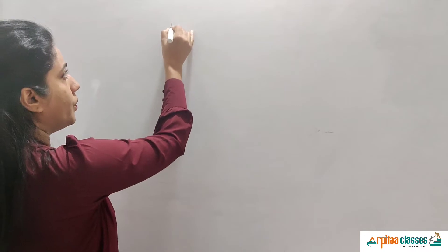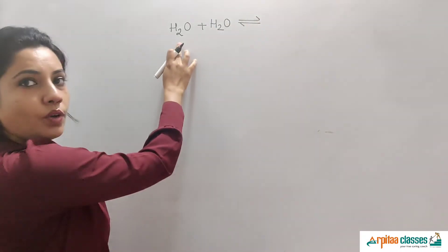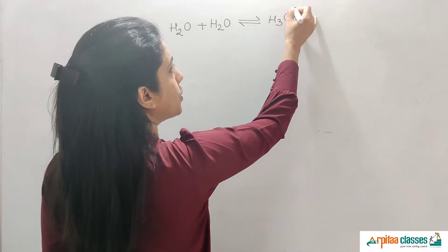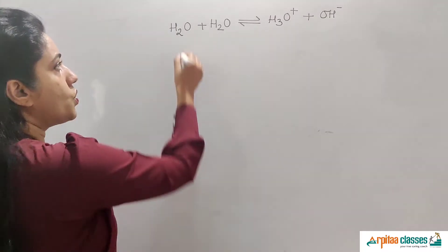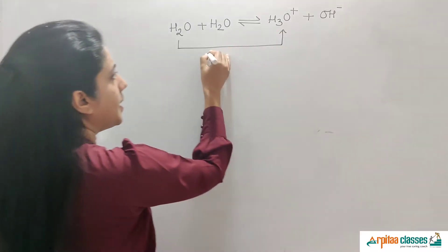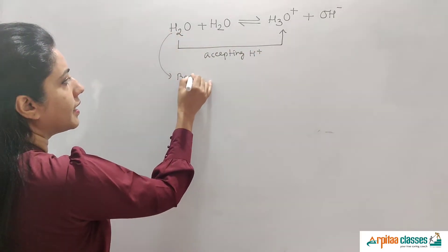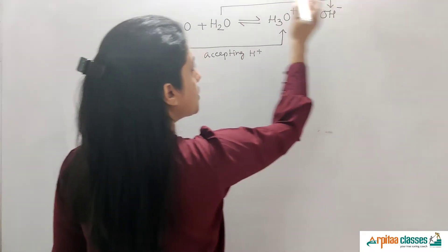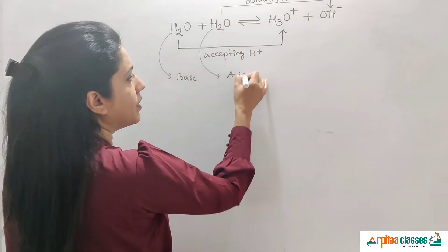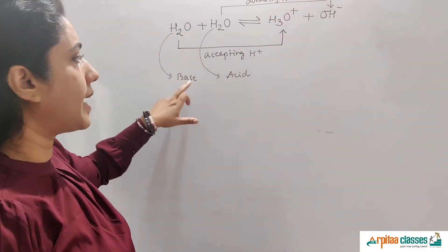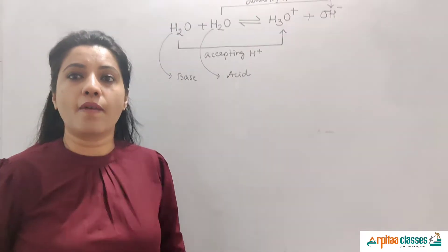Take two molecules of water: one molecule of water accepts a proton to convert into H3O⁺ — acting as a base — and another molecule of water donates a proton to convert into OH⁻ — acting as an acid. So in this reaction, one molecule of water acts as base and another acts as acid. Therefore, even water can be called an amphoteric species.